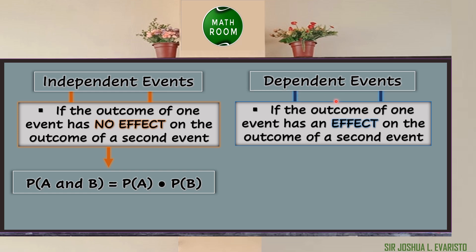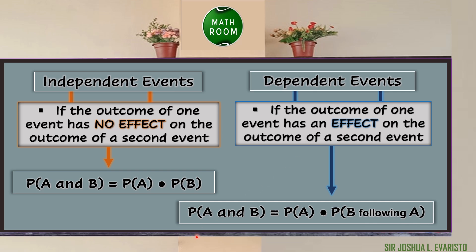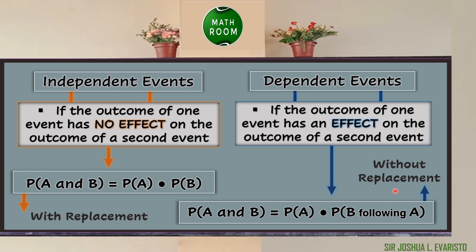On the other hand, if A and B are dependent events, then the probability of both events occurring is the product of the probability of A and the probability of B given A. In symbol: P(A and B) = P(A) × P(B|A). You also have to remember that with replacement, we have an example of independent events, while without replacement is for dependent events.